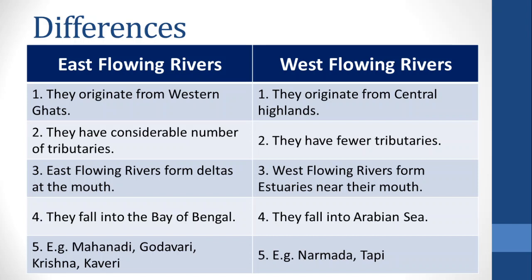East Flowing Rivers form a delta at their mouth, while West Flowing Rivers form estuaries near their mouth. East Flowing Rivers fall into the Bay of Bengal. Examples of East Flowing Rivers are Mahanadi, Godavari, Krishna, and Kaveri. Examples of West Flowing Rivers are Narmada and Tapi.